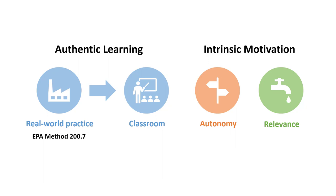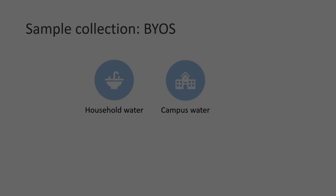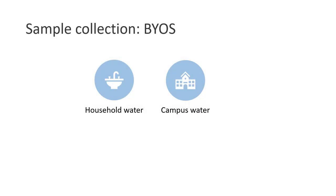Let's start with the sample collection. As mentioned, you may bring your own sample. You may choose to collect water samples from your home or from campus. Each student may choose one sample. Two to four groups of students will be conducting this experiment together. Depending on the group size, we may analyze six to ten water samples per lab session.